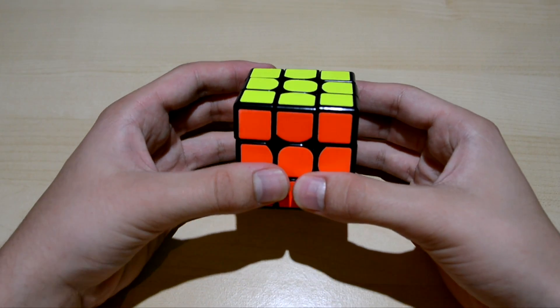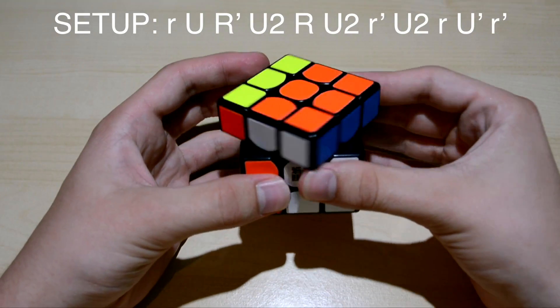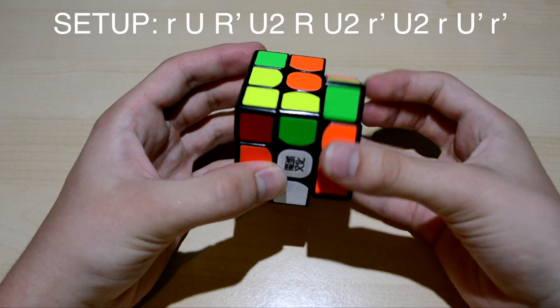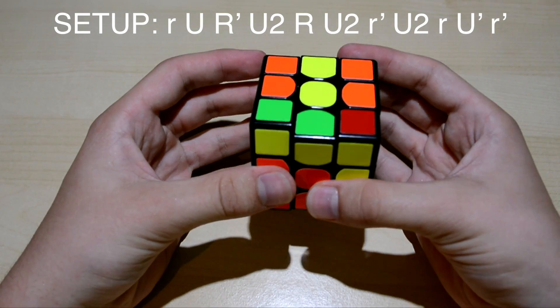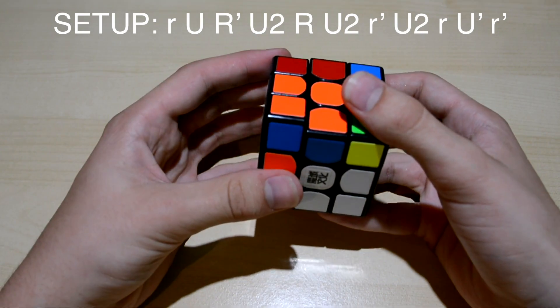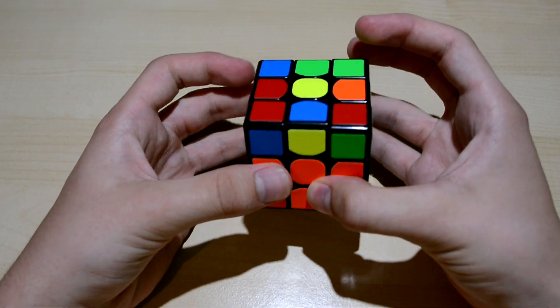To set up this algorithm you can do a small R, U, R prime, U2, R, U2, small R prime, U2, R, small R, U prime, small R prime.